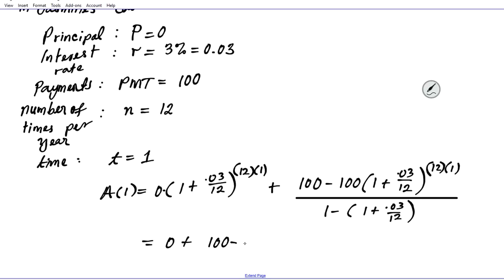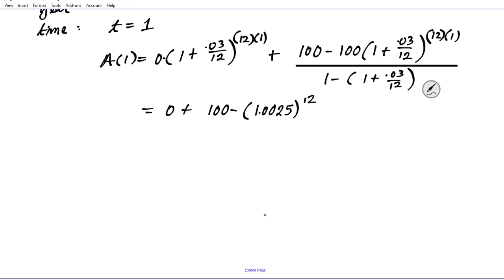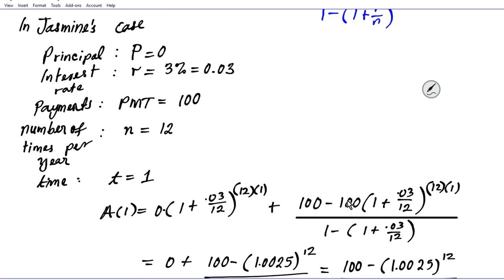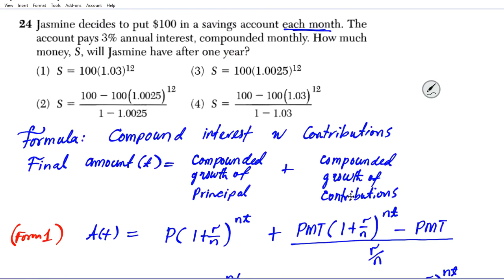We don't want to go too far or else we'll miss our option value for the correct answer. 100 - 100(1.0025)^12 divided by [1 - 1.0025]. We'll stop here because we want to make sure we have a match. As you can see, the correct answer is option number 2.